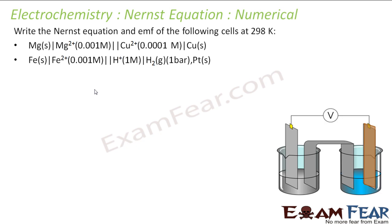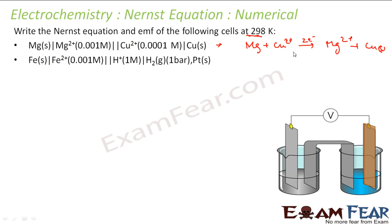The next question: write the Nernst equation and calculate the EMF of the following cell at this temperature. To write the Nernst equation, the first thing is to write the balanced equation. So let's write the balanced equation: Mg becomes Mg²⁺ and two electrons are exchanged; Cu²⁺ is reduced to copper solid.